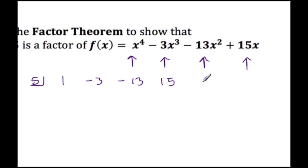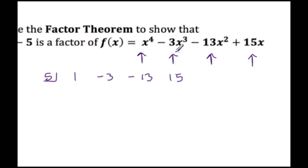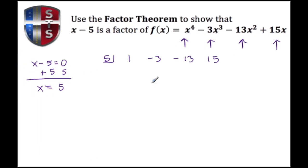Note that we pull the sign in front of each term. Also, if there's a gap in the exponents — for example, if we had X to the fourth, then X, then X squared — we would substitute a 0 for the missing X to the third term.